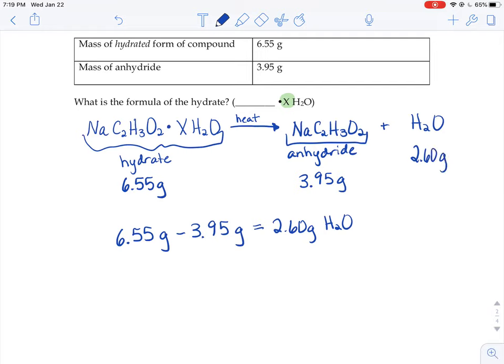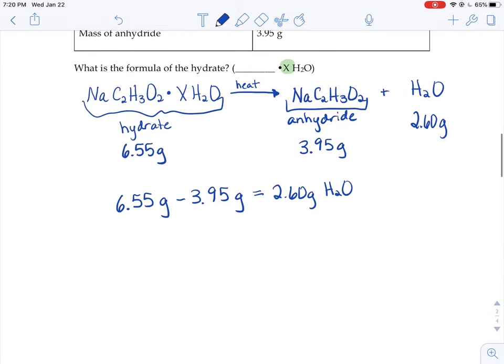Usually when we're doing empirical formula problems, we take masses and convert them to moles to find mole ratios between elements. When you're doing a hydrate problem, the math is just like an empirical formula problem, except instead of finding mole ratios of elements, you're going to look for mole ratios of compounds. So I'm going to take that 3.95 grams of sodium acetate and I'm going to convert that into moles, just like an empirical formula problem.